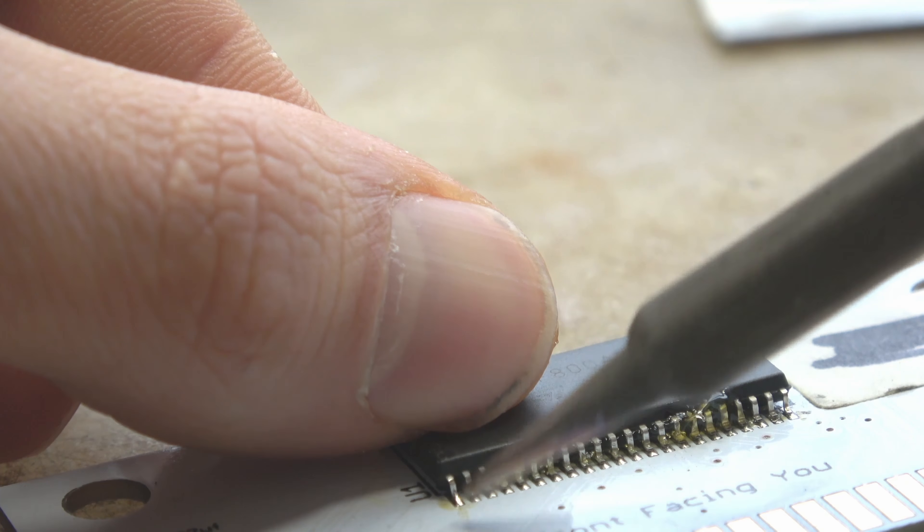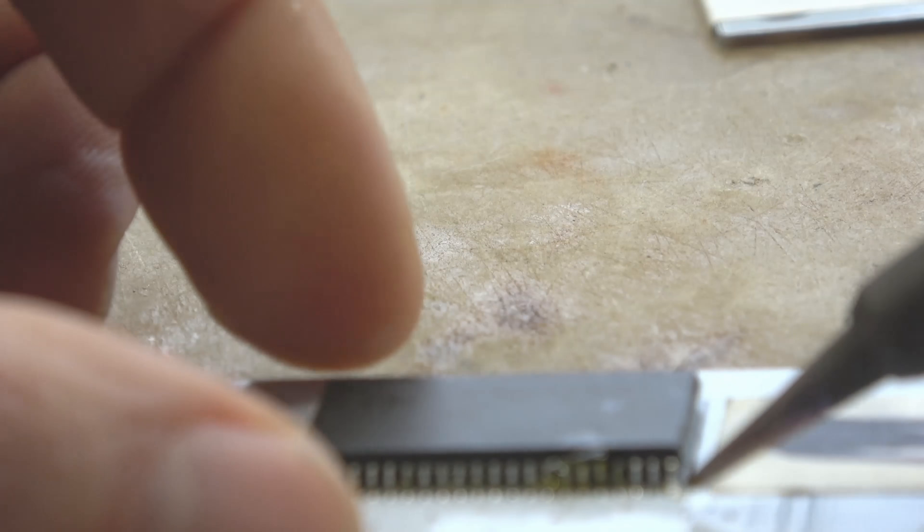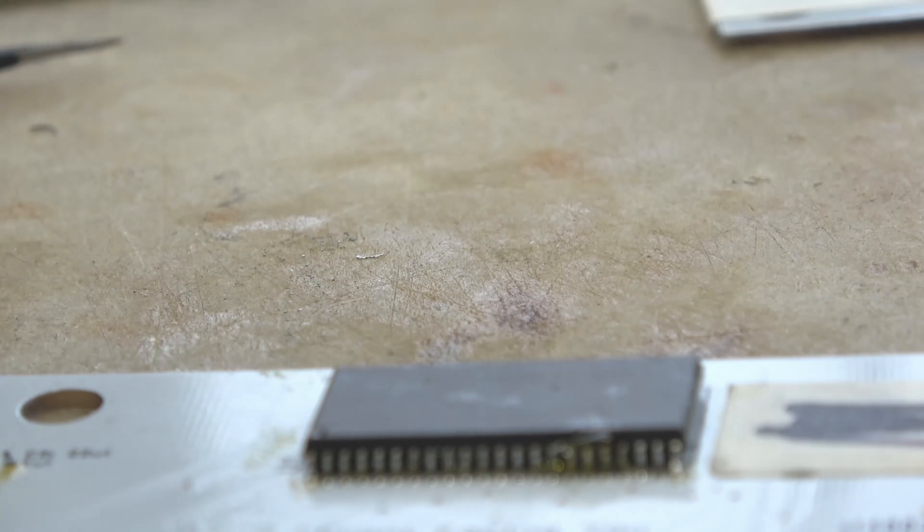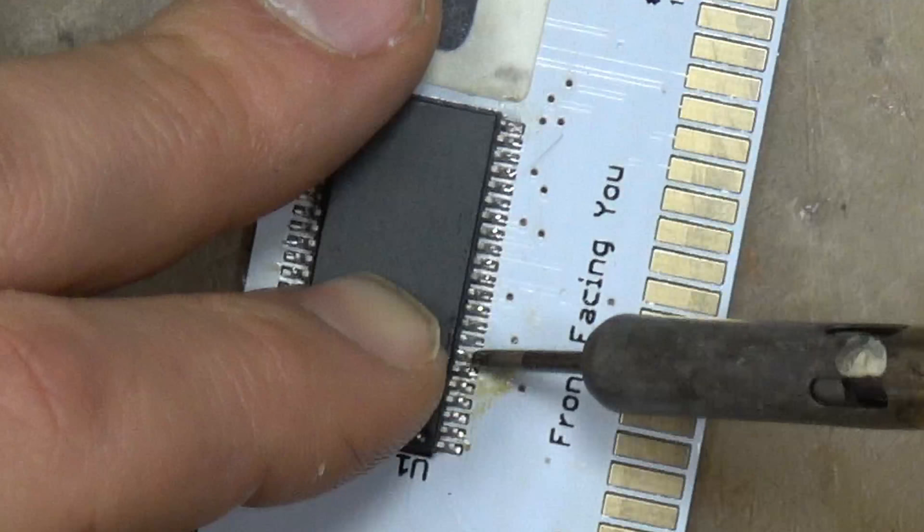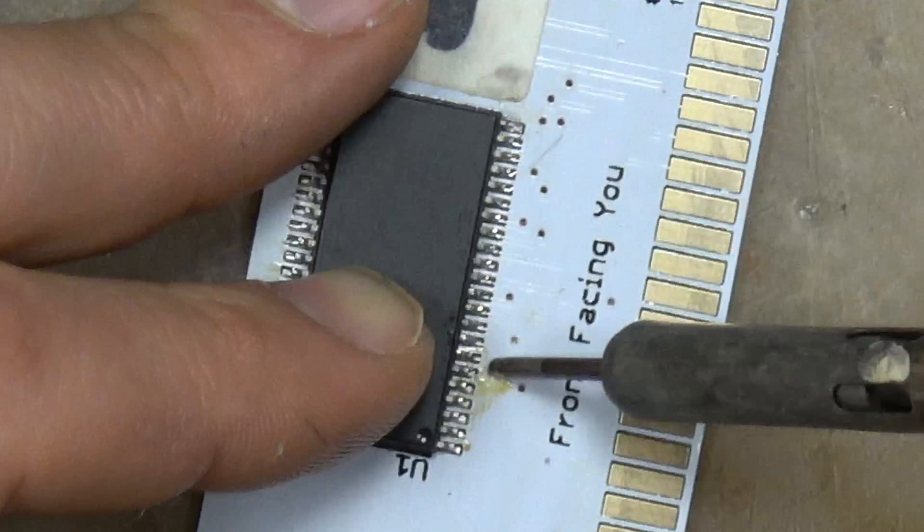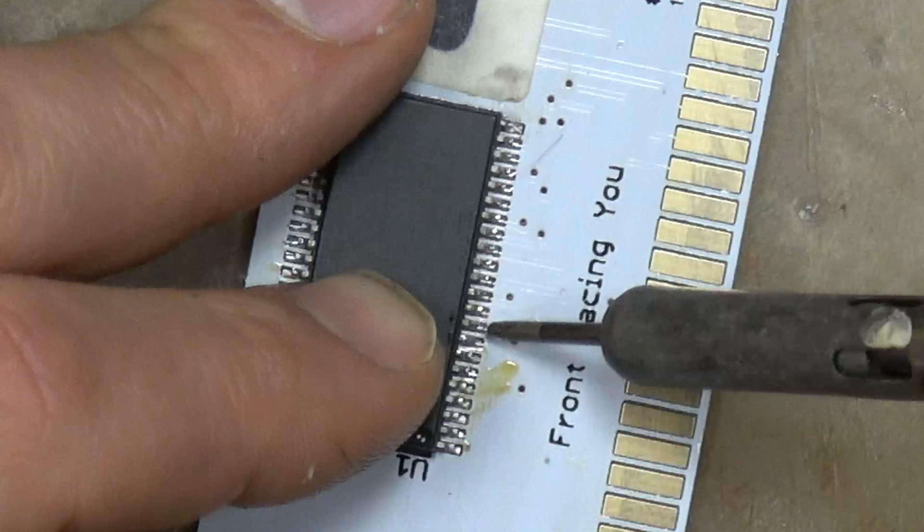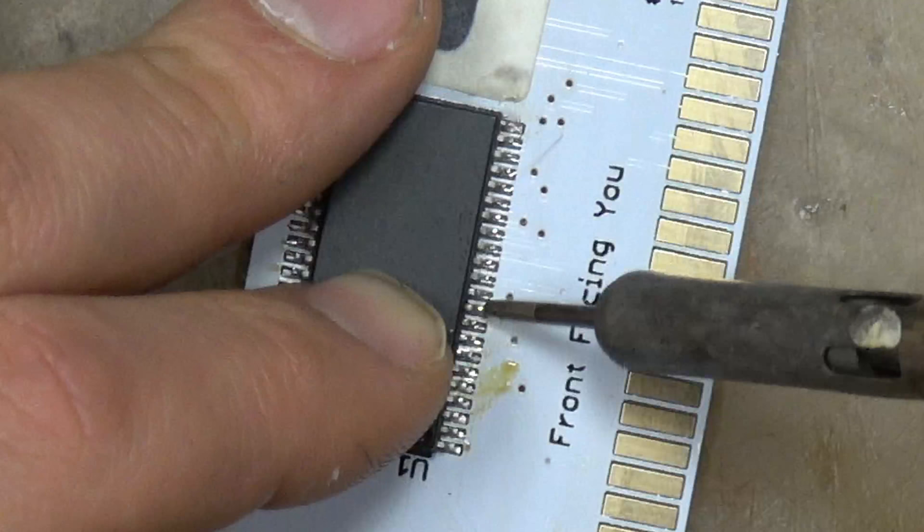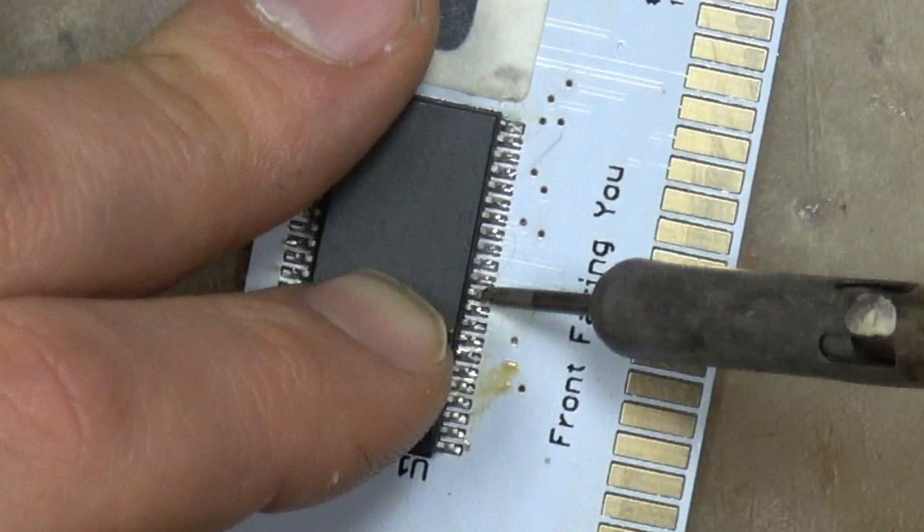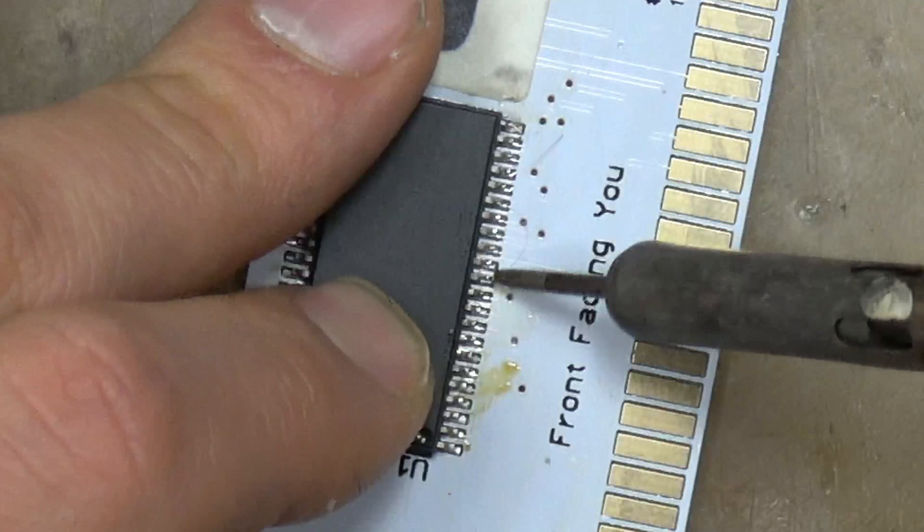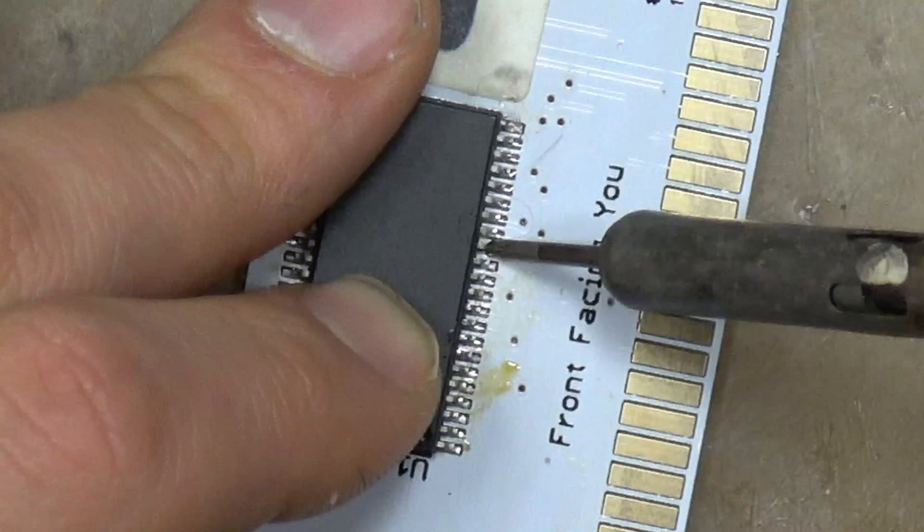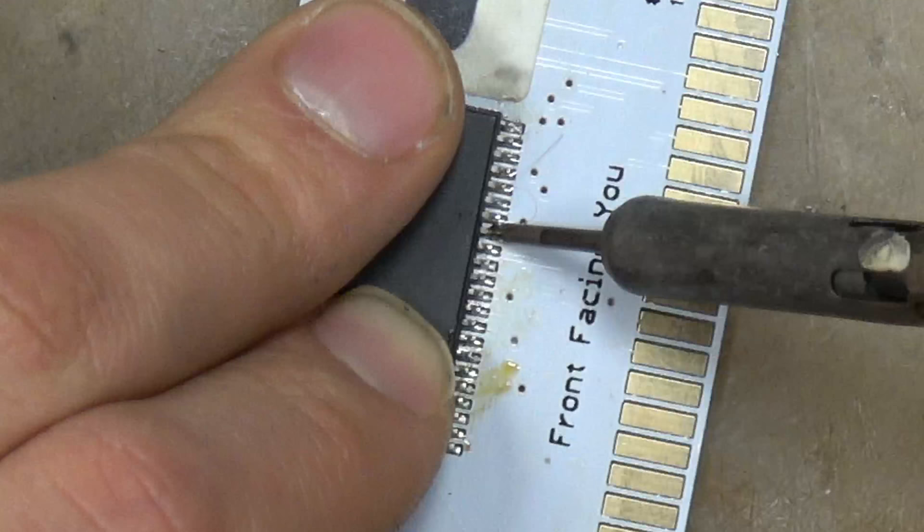The best way to do that is make sure you get all the ones in the corner done first and then you can go in and individually just push each pin down. That's why having the chisel tip is nice because one side is flat and you just push down on each pin and let the iron do the work for you.